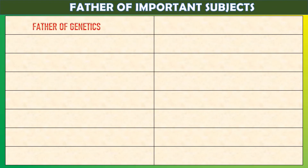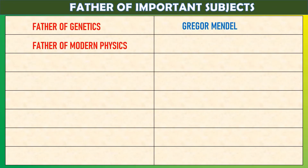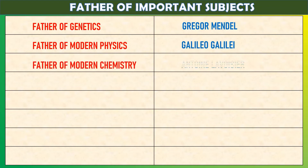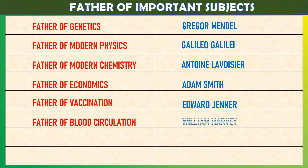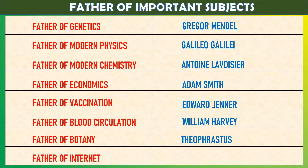Father of genetics: Gregor Mendel. Father of modern physics: Galileo Galilei. Father of modern chemistry: Antoine Lavoisier. Father of economics: Adam Smith. Father of vaccination: Edward Jenner. Father of blood circulation: William Harvey. Father of botany: Theophrastus. Father of internet: Vint Cerf.